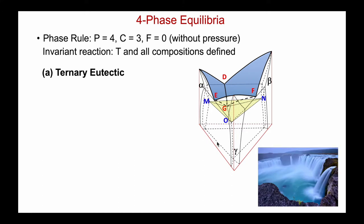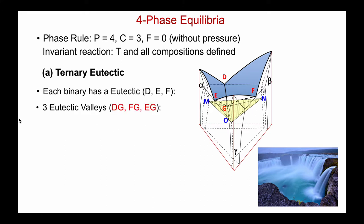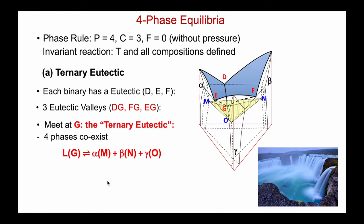You can think of this in an everyday example as three waterfalls all falling into a lake, but that lake instantly freezes, because that's the lowest temperature at which a liquid can coexist. So I have three eutectic valleys — DG, EG, and FG — and they meet at G. That's the ternary eutectic.